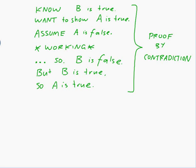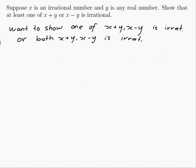I know the general structure that I ought to be working within. Let's go back to my original question. So we want to show that one of x plus y or x minus y is irrational or both of x plus y or x minus y is irrational. So I need to assume that that is false.